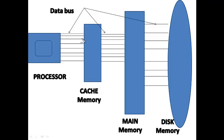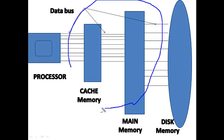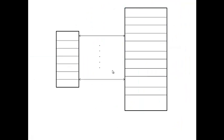The important part of this architecture is the connection between cache memory and main memory. If we want to improve the performance of this system, we should focus on this part. I'll zoom into this part and discuss it in more detail.